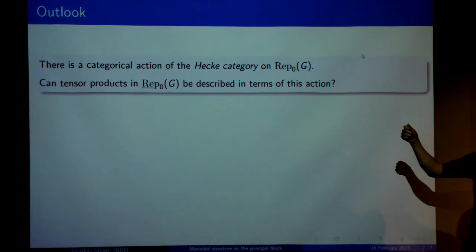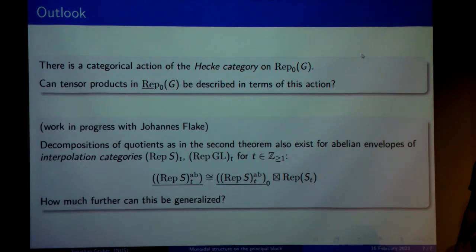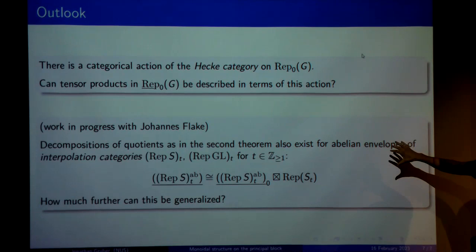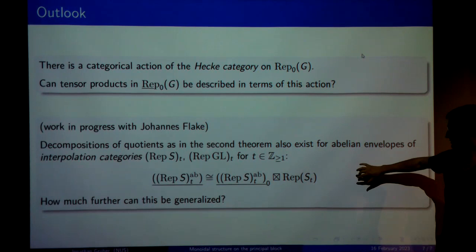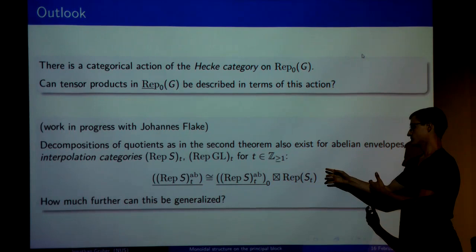Secondly, this is work in progress with Johannes Flackers and Bond: it turns out that decompositions like in the second theorem also exist for other kinds of categories. For example, you can do this for the abelian envelopes of the interpolation categories from Kevin Coulembier's talk, and get a decomposition that essentially tells you exactly the same thing I told you for that other category. We are thinking about the question of how much further this can be pushed.